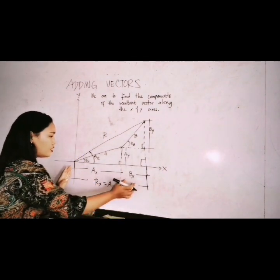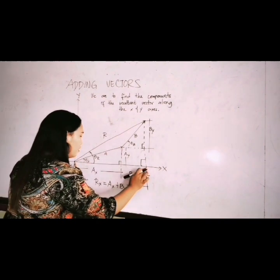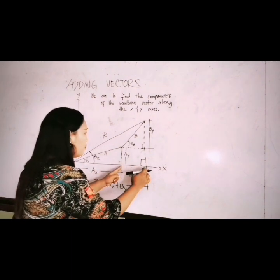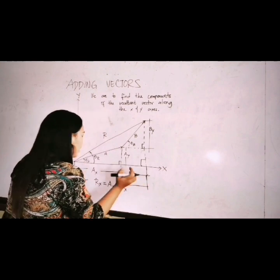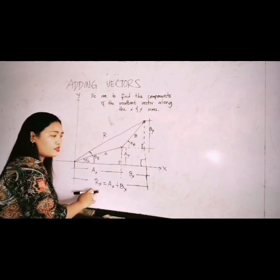R_x is equal to A sub x plus B sub x. Do you see it? As you can see, from here up to here, this side is A_x. And this side, which is straight, is B_x. So if you add A_x and B_x, this is also our R_x.